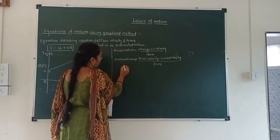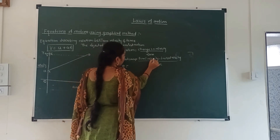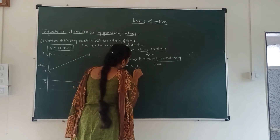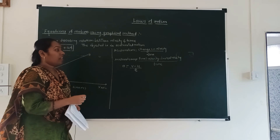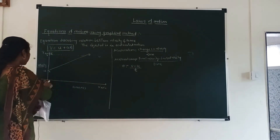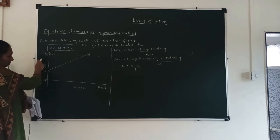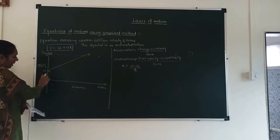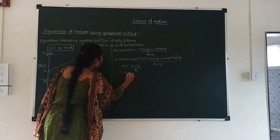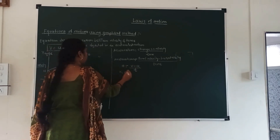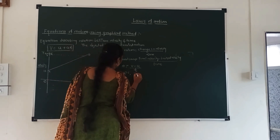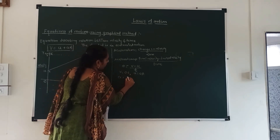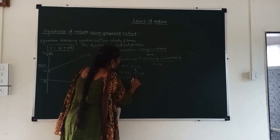Now let us write the equation in symbolic form. Acceleration A is equal to change in velocity upon time, which is final velocity minus initial velocity divided by time. Final velocity is V, which on the graph equals OC. Initial velocity is U, which equals OA. So the equation becomes A is equal to OC minus OA divided by T.